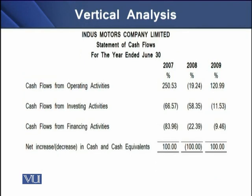Similarly, with reference to the statement of cash flows, we can check the relationship of net cash flows from individual activity sections with the overall change in cash and cash equivalents during that particular period. In 2009, operating cash flows were 121% of total cash flows, and we can see every activity's net cash flows as a percentage of total cash flows.